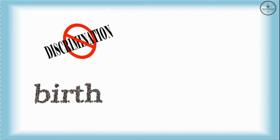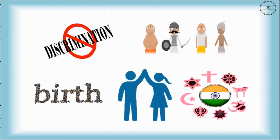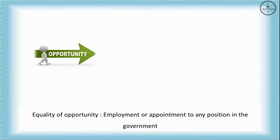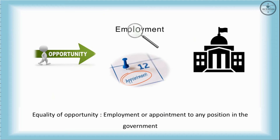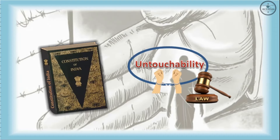No discrimination can be made against any citizen on grounds of birth, caste, religion, or gender. All citizens have equality of opportunity in matters relating to employment or appointment to any position in the government. The constitution also made untouchability a punishable offense.